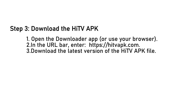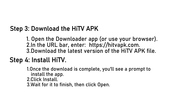Step three: download the HiTV APK. Number one: open the Downloader app or use your browser. Number two: in the URL bar, enter hitvapk.com or search for the HiTV APK official site if the link has changed. Number three: download the latest version of the HiTV APK file.